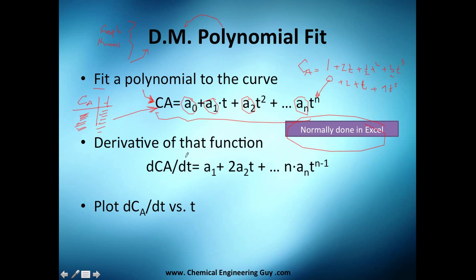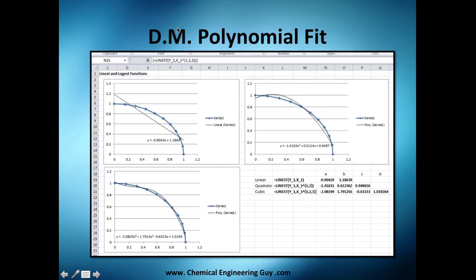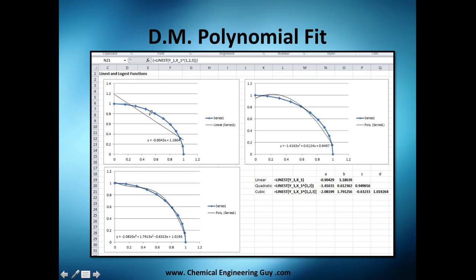We differentiate that polynomial — the constant goes to zero, two stays as two, and the t-squared term becomes t. Once we have the derivative, we plot concentration of A versus that derivative, because we need it to get the differential method going. Before doing a polynomial fit in Excel, you put in your x-axis and y-axis point values. Many times the data forms a curve, not a straight line, so trying to fit a straight line will give you terrible results.